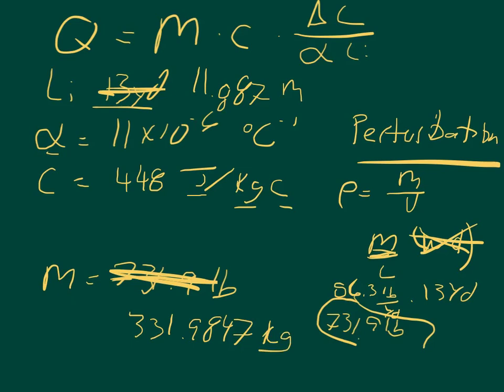And now we can plug everything into our equation and we can find Q, the energy needed. So you take 331.9847 for mass, multiply that by the specific heat, 448, and that's in units of joules, kilograms, Celsius. And then you multiply that by 0.003 meters. What you'll do is you'll multiply the mass times the specific heat, 331 times 448, and multiply that by the change of heat over the thermal expansion coefficient times the initial length.